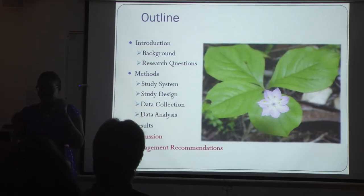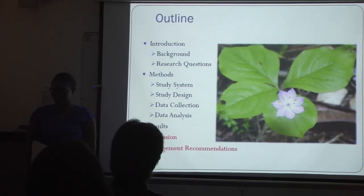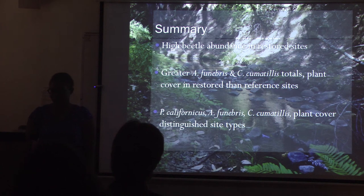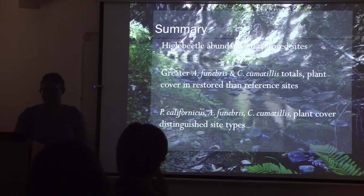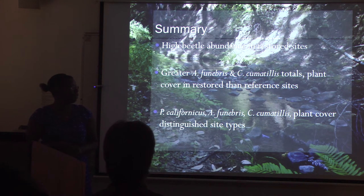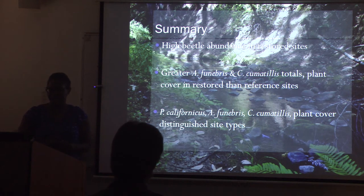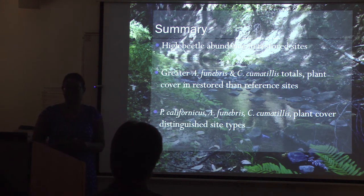Now for my discussion and management recommendations. I determined that there was a high beetle abundance at the restored sites. I also found that there were greater abundances of A. phenivorous and C. cumotillus totals and plant cover in the restored versus the reference sites. It was determined that Pterosticus californicus, A. phenivorous, and C. cumotillus and plant cover were all characteristics that could be used to determine the difference between a restored and reference site.